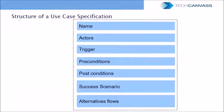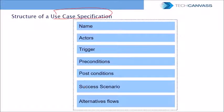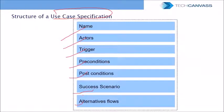The last part of the use case model is creating the script of the use case, also known as the use case specification document. This document lists various components of the use case: name, actors, trigger, preconditions, postconditions, success scenario, and alternative scenarios. We will look at each of these in detail.